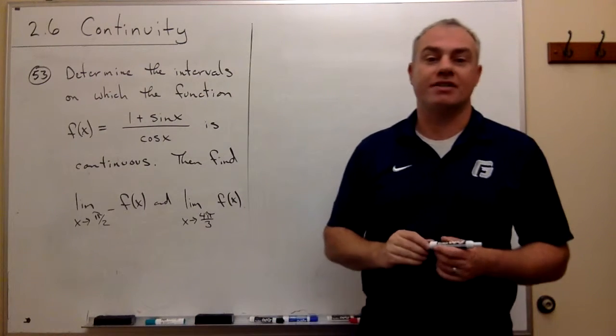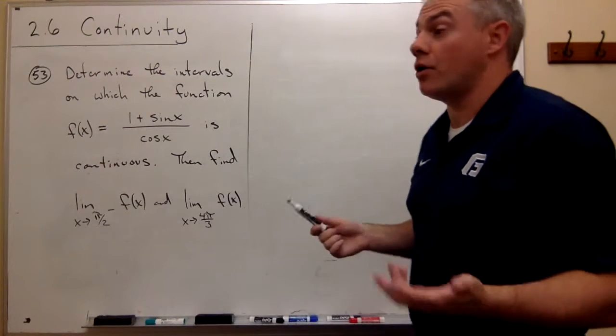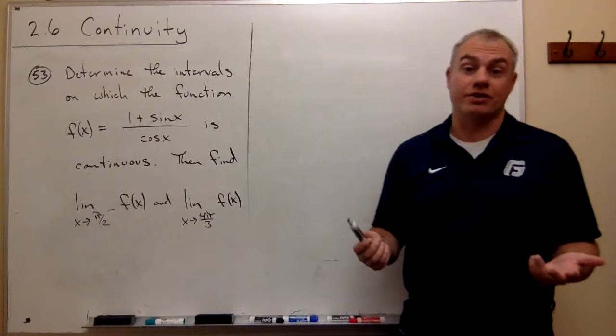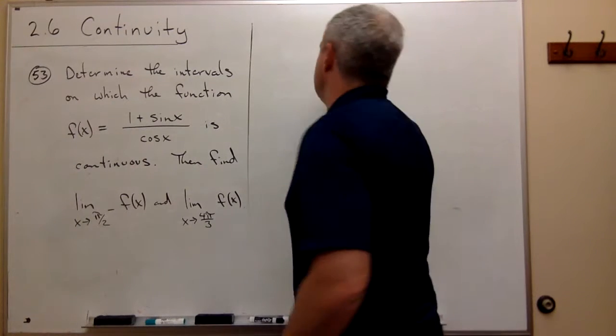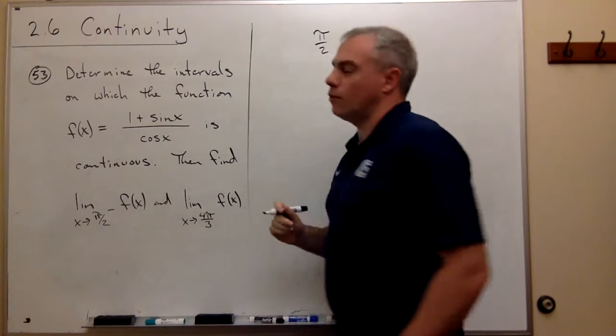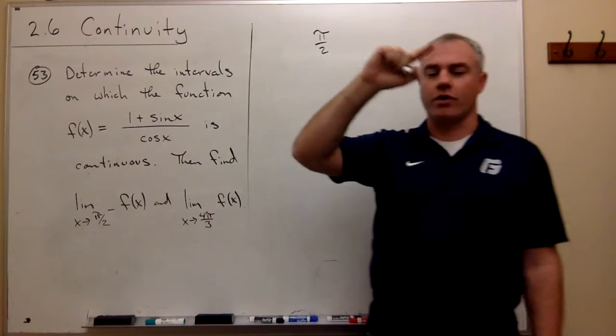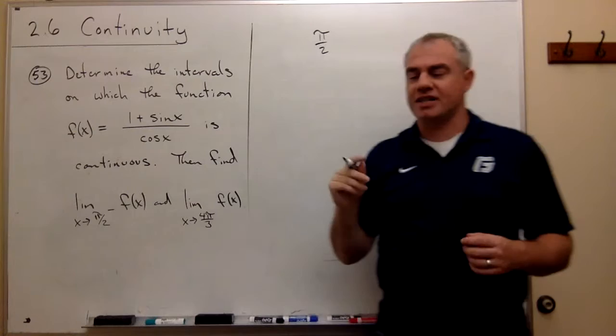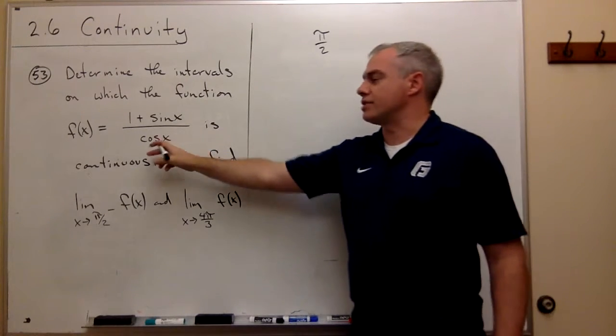And the first place that I think of is cosine is 0 at pi over 2, right? So let's write pi over 2 up here. And where's the second place, if we're going around the unit circle, the second place that cosine is 0?